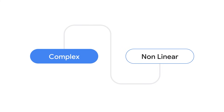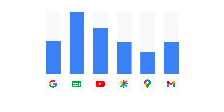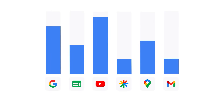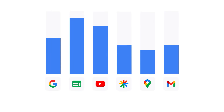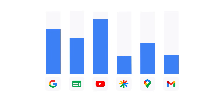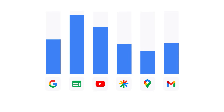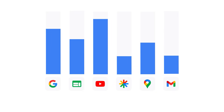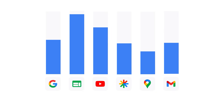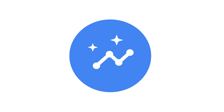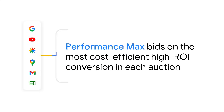With consumer journeys being as complex and nonlinear as they are today, the best channel in one auction may not be the best option in another auction. That's why it's important to keep in mind that the average cost per acquisition (CPA) or return on ad spend (ROAS) of a single channel in a cross-channel campaign doesn't tell the whole story. Performance Max looks across channels to bid on the inventory that's predicted to deliver the most cost-efficient, high ROI conversion in each auction.